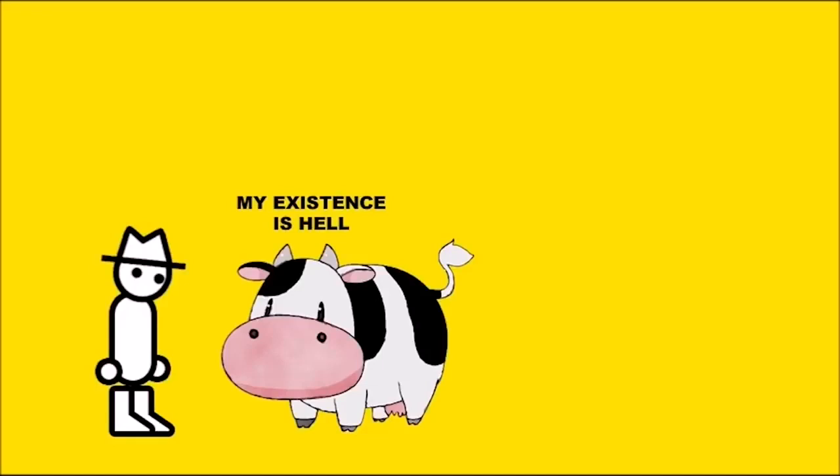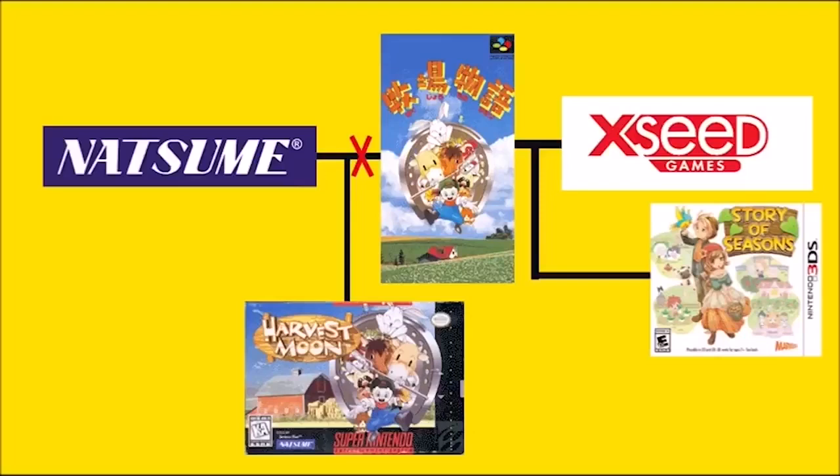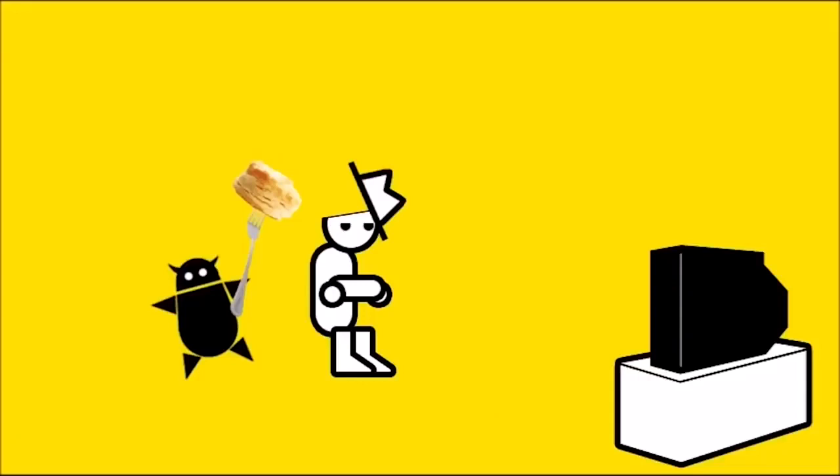OK, I looked this up and I think I've got the details square. The popular and influential Japanese cutesy farming sim franchise Farm Story was published by Natsume in the West under the name Harvest Moon. In 2014, the developer switched publishers and its games have since been released in the West under the name Story of Seasons because Natsume reserved the rights to the name Harvest Moon.